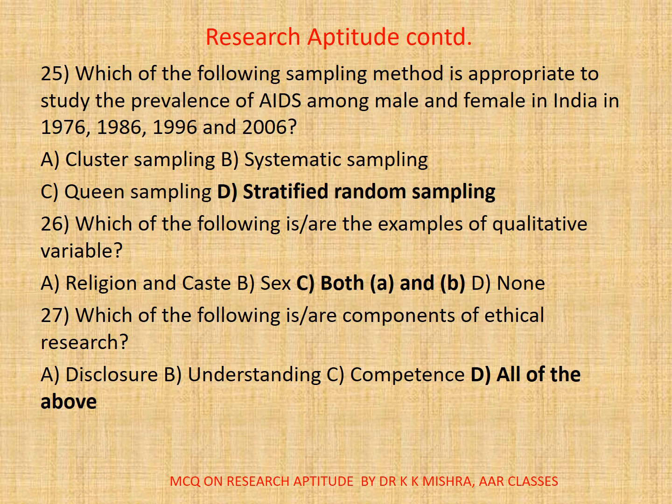Question twenty-five: Which of the following sampling methods is appropriate to study the prevalence of AIDS among young males and females in India in 1976, 1986, 1996, or 2006? The correct option is D: Stratified random sampling.